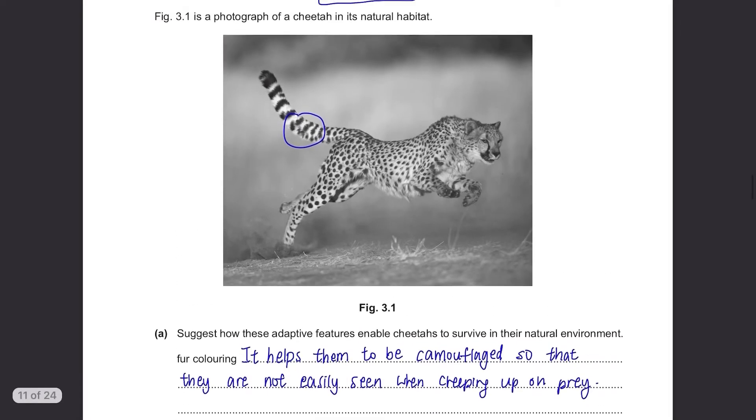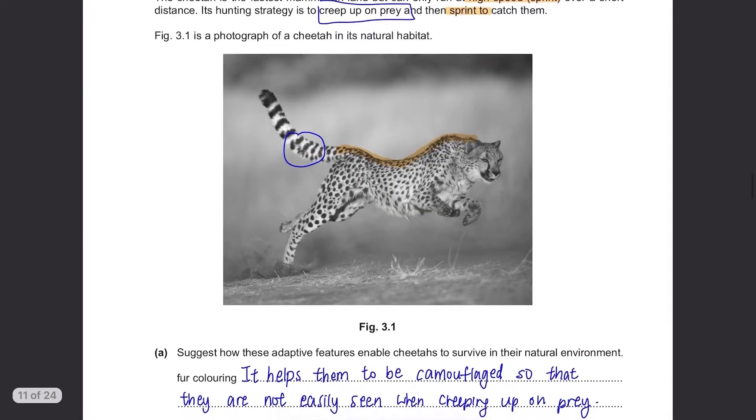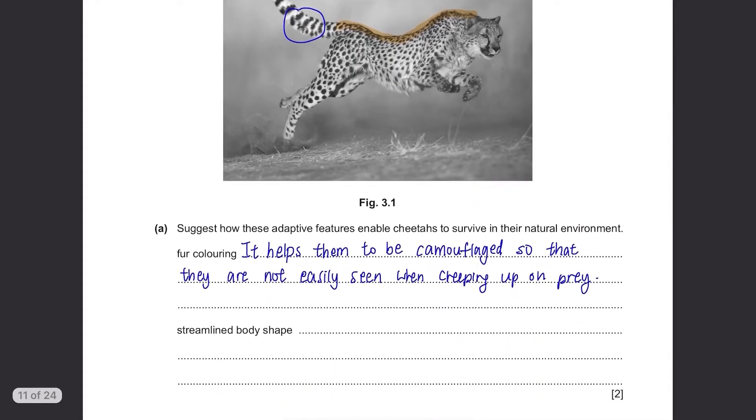We can already see from their body shape that they are very flexible and agile. This feature helps them to run fast. Make sure you write points related to the given information. You can write other points as long as they make sense and are clear on the diagram since you are not required to memorize some features of a cheetah.